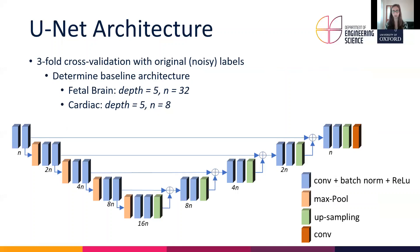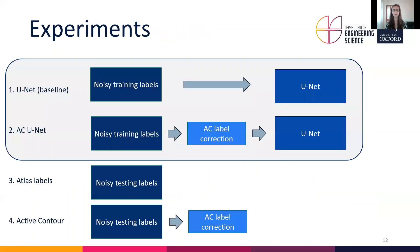With every subsequent layer block the number of convolutional filters doubles. For the cardiac dataset we use a depth of 5 and an initial number of feature maps of 8. For both datasets we ran two experiments: the baseline — training the U-Net with noisy training labels — and the second, where we apply active contour label correction to the noisy labels and then train the U-Net with these updated labels.